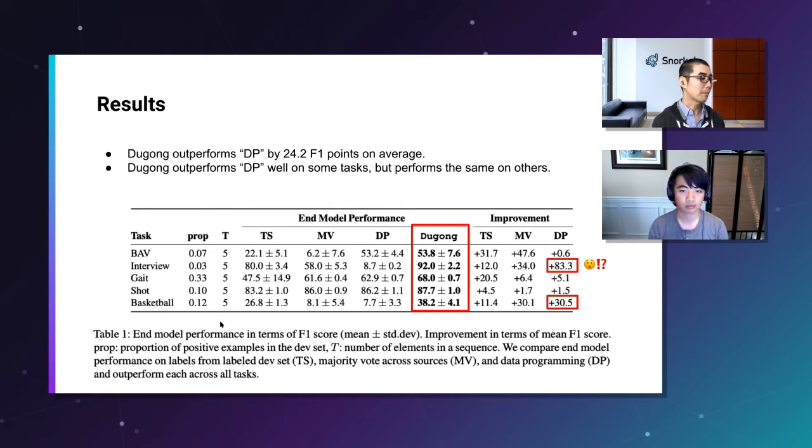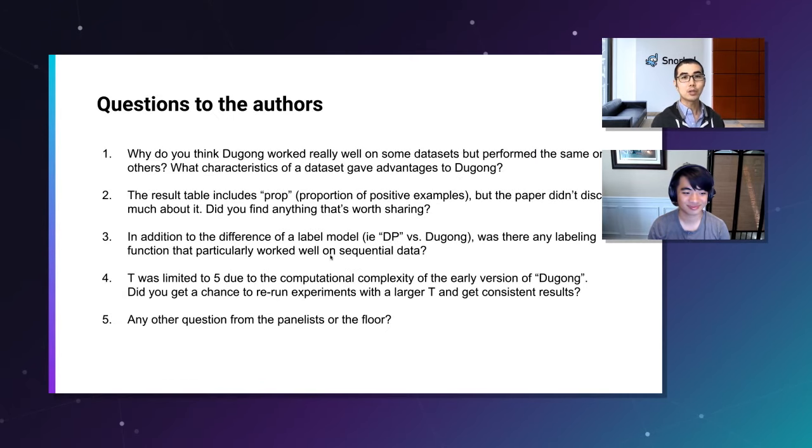Yeah, regarding computational time complexity, I actually asked this question to Fred and Paroma. Why we have only five for T and the answer was computational complexity. When we wrote the paper and did this experiment, that's related to this question right here. So it was limited to five due to computation time complexity of the early version Dugong. And you said you ended up tuning how to compute the label model and estimate it. Did you get a chance to rerun these experiments and get a consistent result?